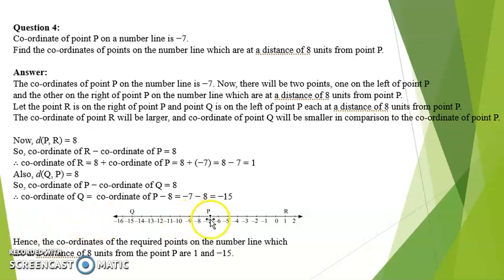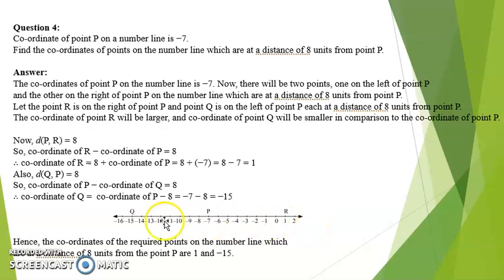We have the figure here for reference. P is at minus 7. Now there will be two points — one on the left hand side and one on the right hand side — both at a distance of 8 from P. Let point R be on the right hand side of P and point Q be on the left hand side. R will have the larger coordinate and Q will have the smaller coordinate.